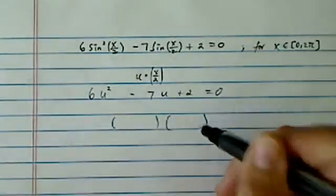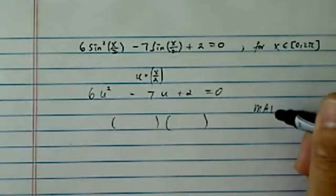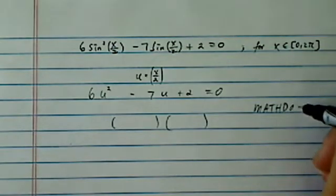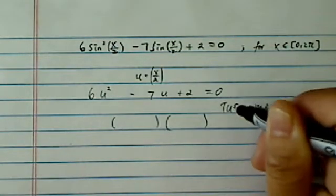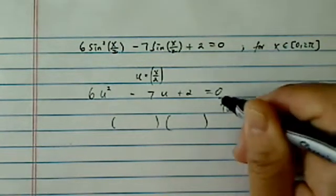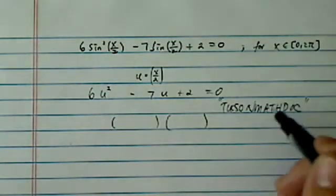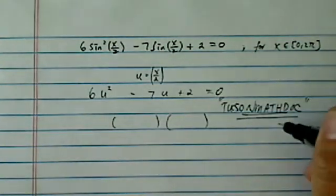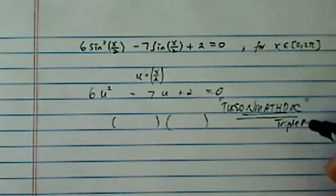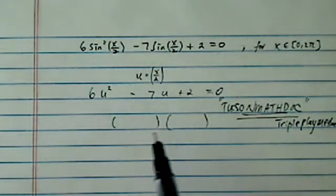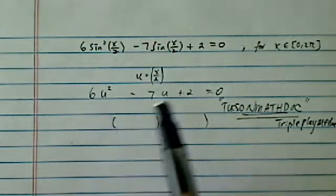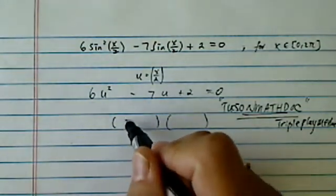Now factor this one. If this is not clear, you can look on Tucson math doc channel. Look on this math channel and type in triple play method. I go into detail how to factor things with a coefficient that's not 1.